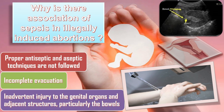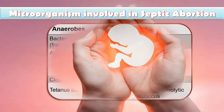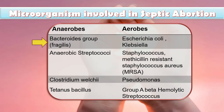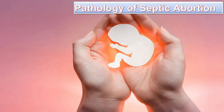The microorganisms involved in septic abortion include anaerobes such as Bacteroides fragilis group, anaerobic streptococci, Clostridium welchii, and tetanus bacillus. Aerobic species include E. coli, Klebsiella, Staphylococcus, MRSA, Pseudomonas, and Group A hemolytic Streptococcus.